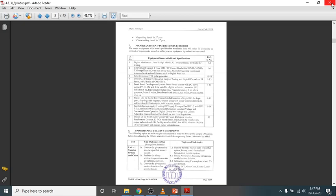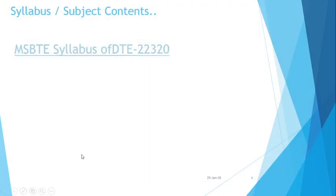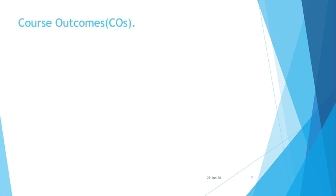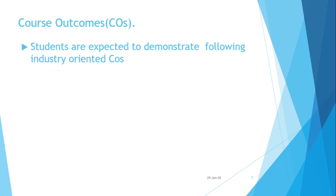This subject is also called a course, and there are certain course outcomes — aims of what we are going to achieve after learning this subject. Students are expected to demonstrate industry-oriented course outcomes, meaning what the industry requires should be fulfilled by learning this subject.